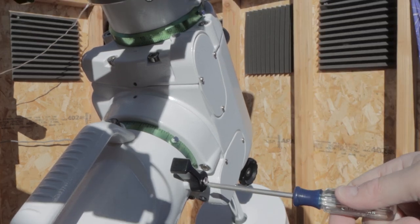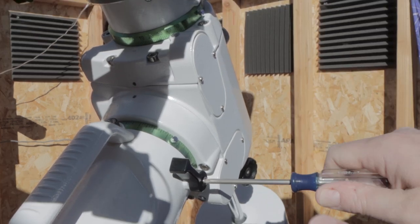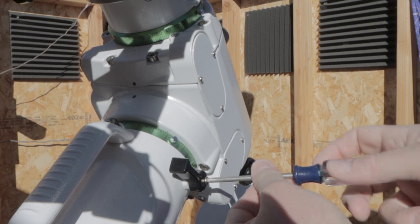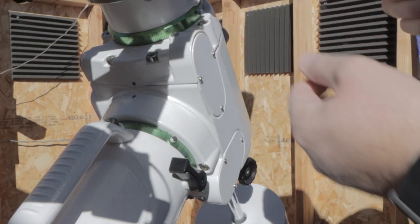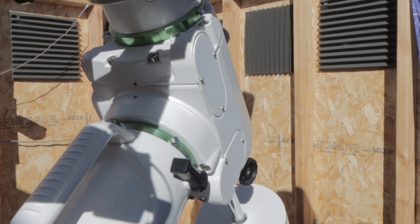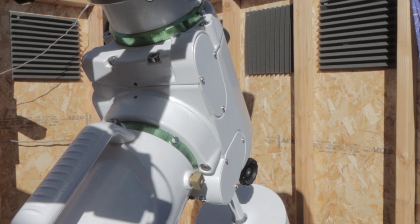The first thing you're going to want to do is remove the clutch levers and you just need a Phillips screwdriver. Now I'm not going to do the declination in today's video. It is exactly the same as the right ascension and I'm not having any issues with the declination at the moment so I'm not going to bother with that. But the RA is causing me some issues and I do need to fix that.